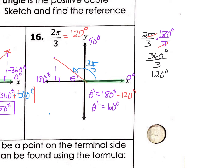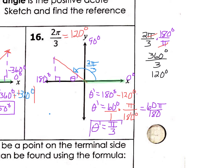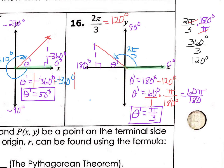Then we have to convert that 60 degrees back to radians for our final answer. I multiply by the reverse conversion — now I'm converting degrees back to radians, so the 180 degrees goes in the denominator and the π goes in the numerator. So we have 60π over 180. The degrees cancel, and you reduce that in your calculator to end up with theta prime equaling π/3, because you get the fraction one-third. That is an important step in your unit circle.